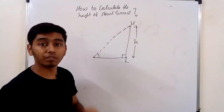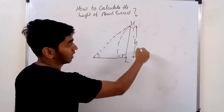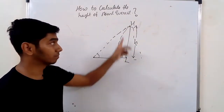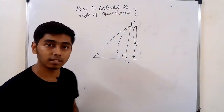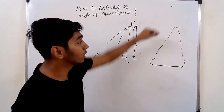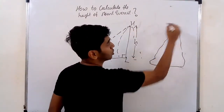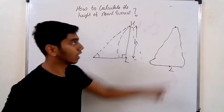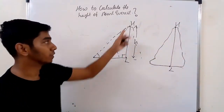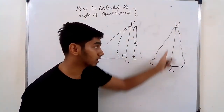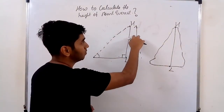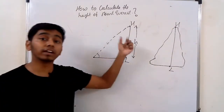This is the height of Mount Everest. The mountain's surface will be uneven, but we consider the topmost point and the lowest point and draw a perpendicular line HL. We'll be calculating this perpendicular distance. So let's see how India calculated this height.